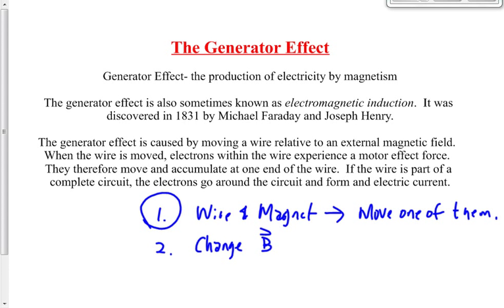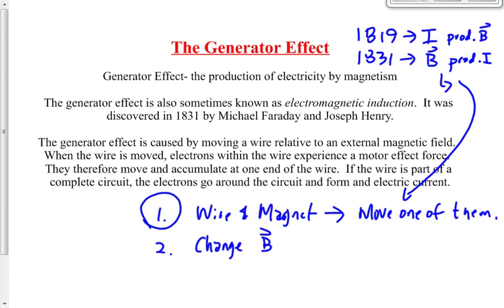So again, remember, Orsted in 1819 says a current produces a magnetic field. Always. In 1831, we say a magnetic field produces a current, but not always. It only happens if one of these two conditions takes place. You move the wire or the magnet or you change the value of the magnetic field. Does that make sense?